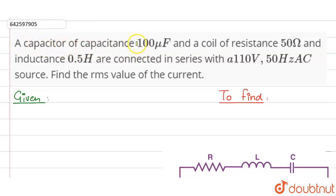A capacitor of capacitance 100 microfarad and a coil of resistance 50 ohms and inductance 0.5 henry are connected in series with a 110 volt, 50 hertz AC source. Find the RMS value of the current. So in the question we are given...